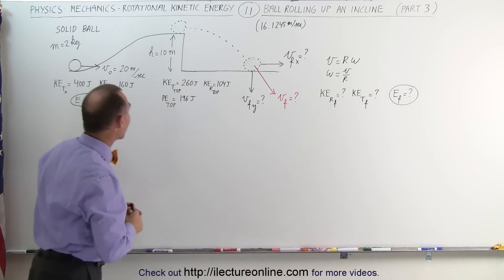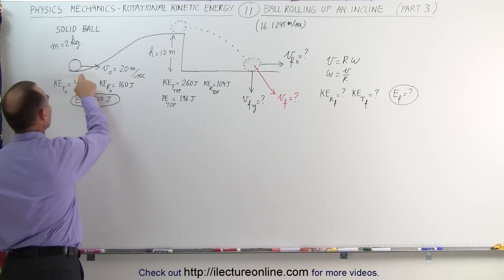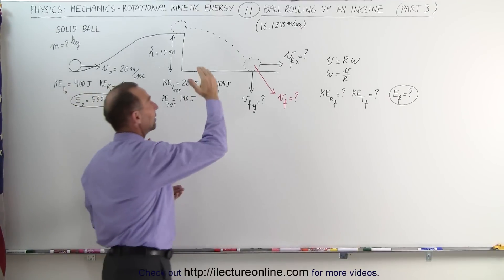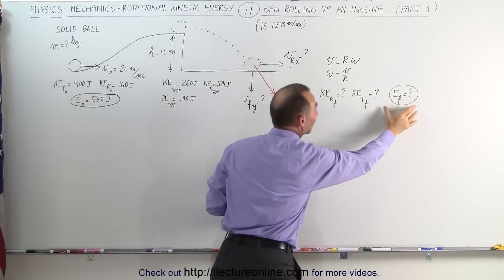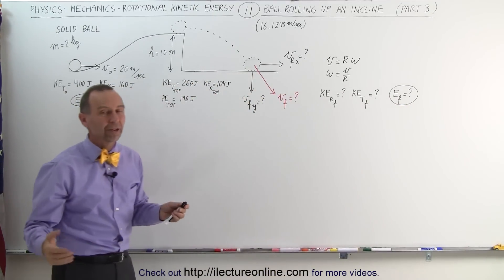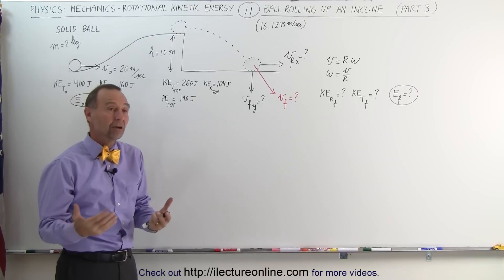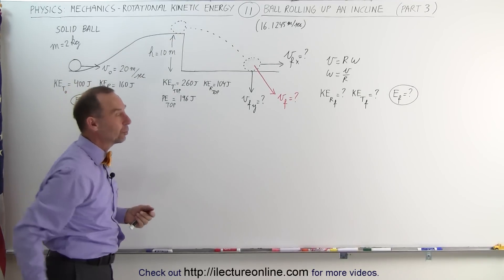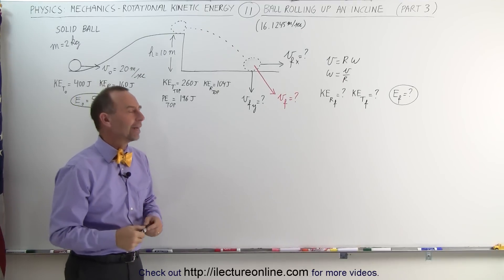Now remember what we found initially: the initial energy at the bottom of the hill was equal to 560 joules. The question is, when it then hits the ground here, does it still have 560 joules of energy? It should because there's no energy lost due to friction, so the final energy should equal the initial energy. Let's go find out.